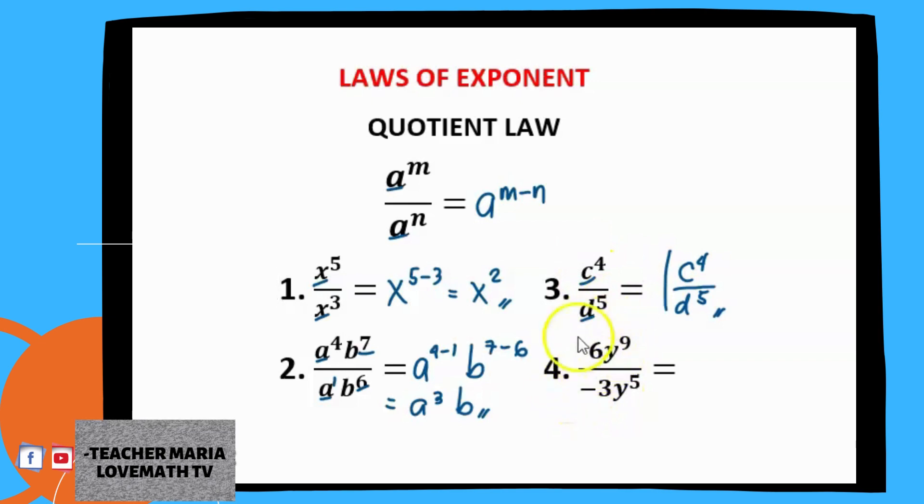For number 4, we have numerical coefficients 6 and negative 3. So we have 6 y raised to 9 divided by negative 3 y raised to 5. Since we have numerical coefficients, we have to divide it first. 6 divided by negative 3 is, 2 or negative 2? Negative, because they are having different signs. Now y raised to 9, y raised to 5, they have the same base y and then 9 minus 5. What is the final answer? 9 minus 5 is 4. So the final answer will be negative 2 y raised to 4.